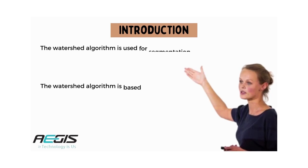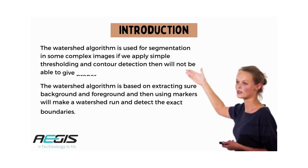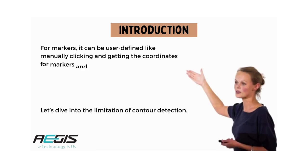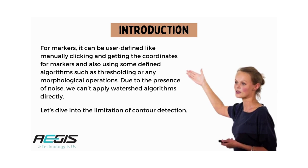Let's start with the introduction. The watershed algorithm is used for segmentation in some complex images. If we apply simple thresholding and contour detection, we'll not be able to get proper results. The watershed algorithm is based on extracting the background and foreground, and then using markers to make a watershed run and detect the exact boundaries. This algorithm generally helps in detecting touching and overlapping objects in the image. For markers, it can be user-defined, like manually clicking and getting coordinates, or using defined algorithms such as thresholding or morphological operations.